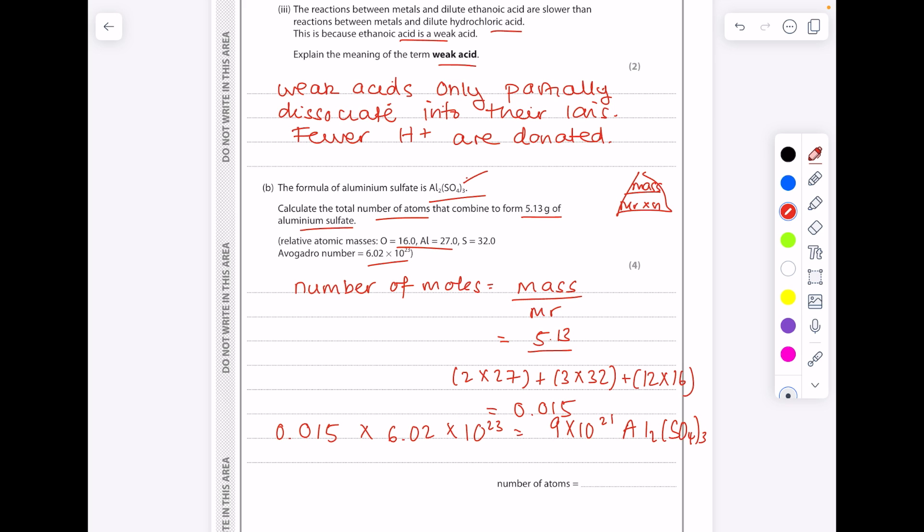But then you need to add up how many atoms there are all together. So we've got 2 aluminiums, 3 sulphurs, that's 5, plus 12 oxygens, that gives us 17. So just multiply that answer by 17.